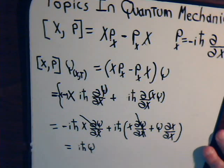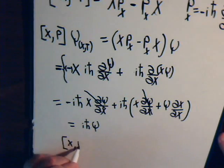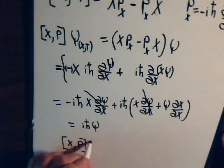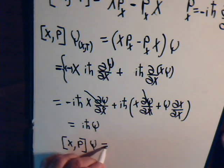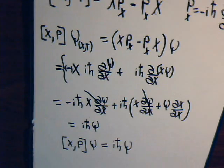So the commutator of this, written like this, operating on psi, just simply multiplies the function psi by i h-bar. And really, that's all there is to it concerning this momentum position commutator.